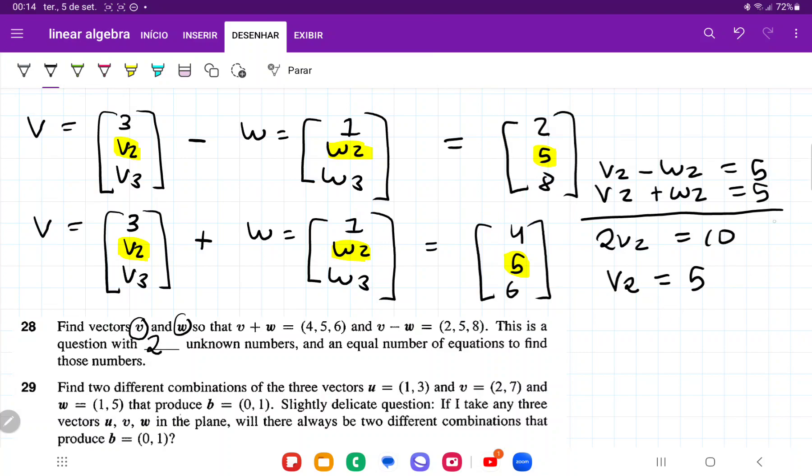If v2 equals 5, I'm going to plug it back into this equation. I have 5 plus w2 equals 5, so w2 equals 0. Once I have found this, I substitute this back in. So v2 is 5 and w2 is 0.